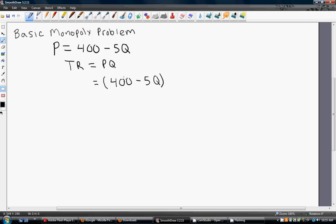So, that's the P part of this equation, and then we're just going to multiply this through by Q. Simplifying here, we get total revenue equals 400Q minus 5Q squared.